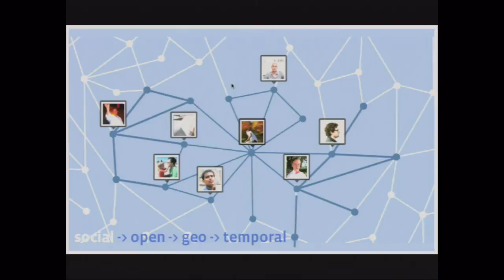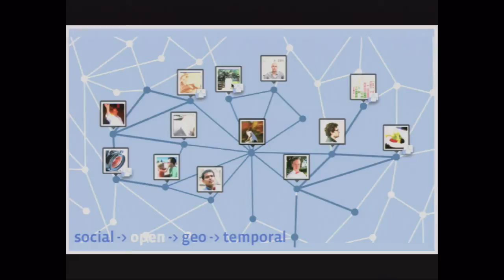For a brief background and history, Facebook really started with a social graph. We define the social graph as the relationships between people that help you connect and share with the people you care about the most. Then last year at F8, we announced the Open Graph. The Open Graph added the ability for you to connect yourself and your friends to objects or URIs on the internet.